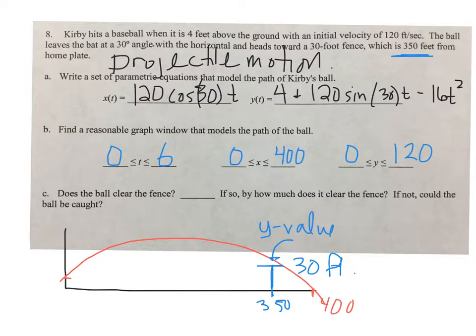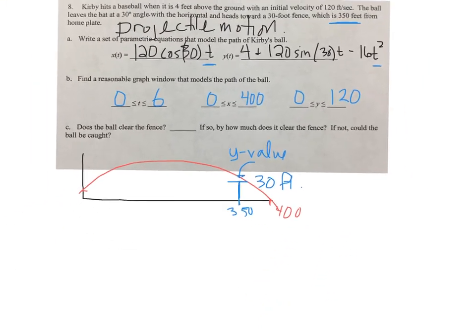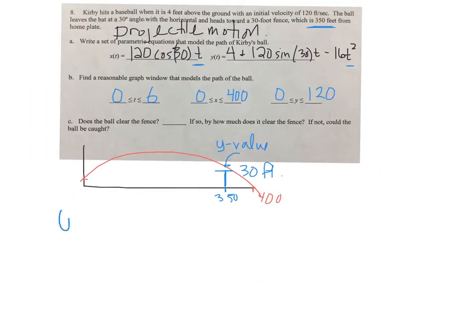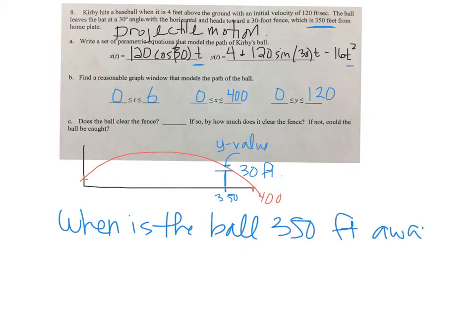Both x and y have a t in them. So if I can figure out when the ball is 350 feet away, I would be able to plug that t value into this equation to figure out how high the ball is at that exact same time. That's exactly what we're going to do.